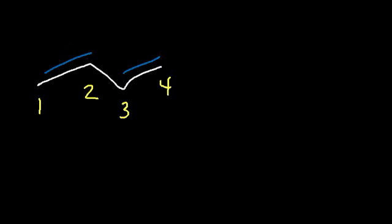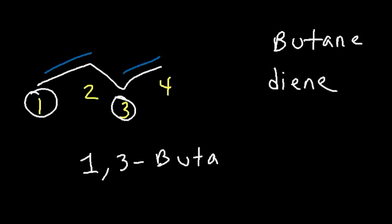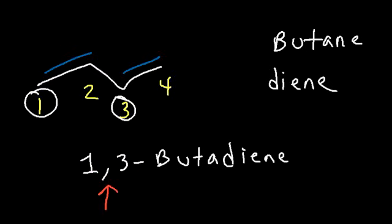Now what if we have two double bonds? We have a total of four carbons, which is associated with the name butane. But since we have two double bonds, we need to add the suffix "-diene". We have a double bond at 1 and at 3, so it's called 1,3-butadiene. The use of a comma is required to separate two numbers, and the use of a hyphen is required to separate a number and a letter.